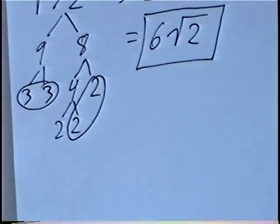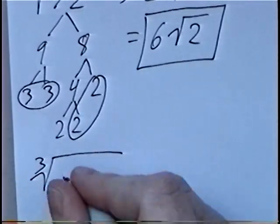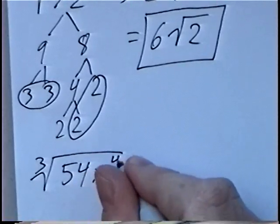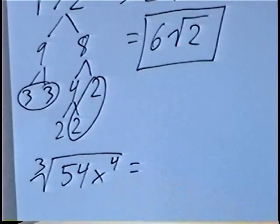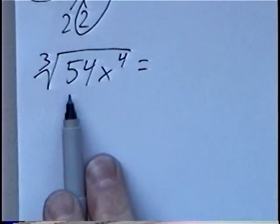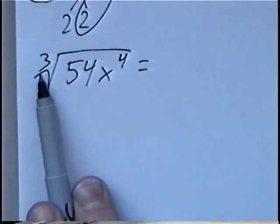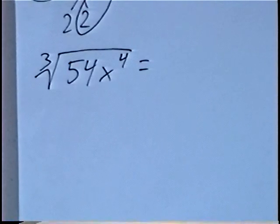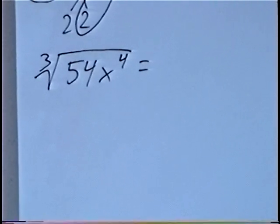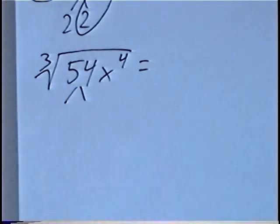The second question is the cube root of 54x to the 4th power. Simplifying this, we can do the number first and then the variable. For the cube root of 54, there's no single number times itself 3 times that equals 54. So we can do the factor tree on 54, using any two numbers that multiply to 54 — we could use 9 times 6.